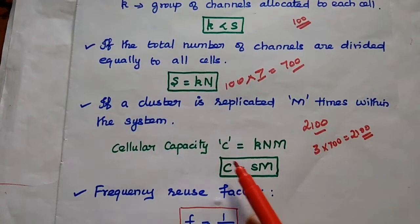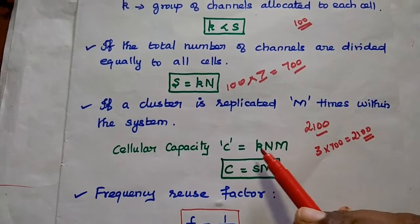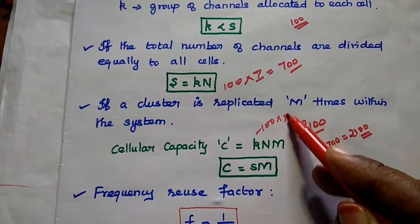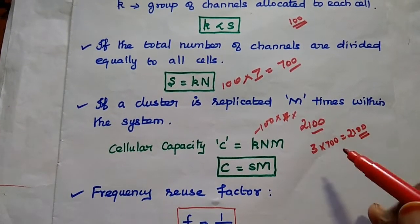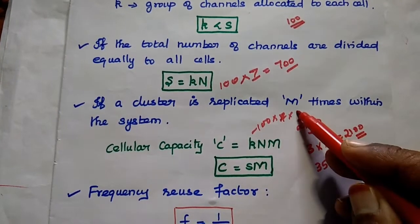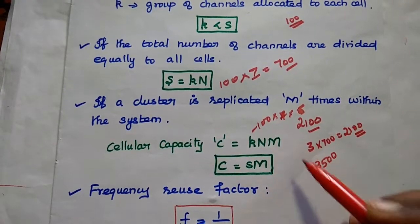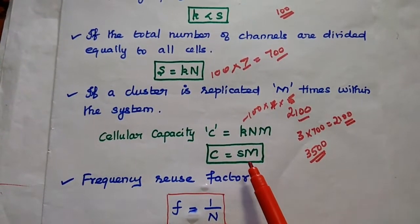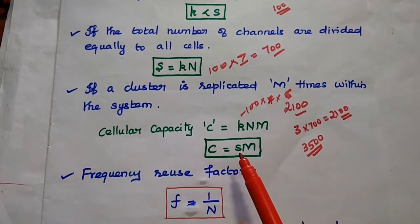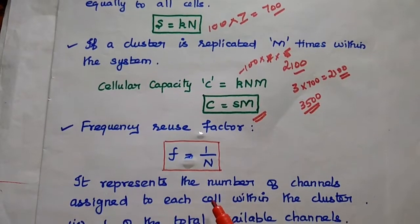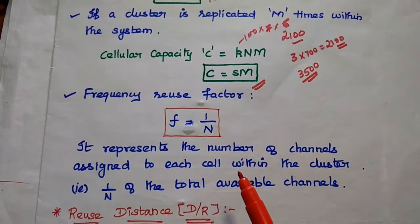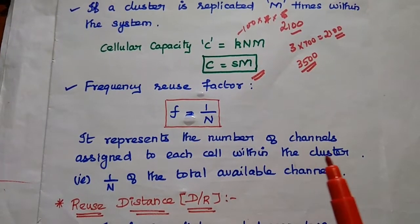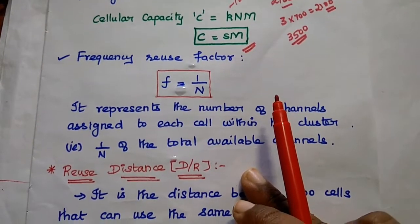Cellular capacity is obtained using the formula C = K × N × M, where K is the number of channels allocated to each cell (100), N is the number of cells in a cluster (7), and M is the replication factor. For example, to support 3,500 users, we replicate the cluster 5 times to get 3,500 users within that area. This capacity can also be represented as S × M, where S = K × N is the total channels. The frequency reuse factor represents the number of channels assigned to each cell within the cluster — it is 1/N of the total available channels, and it is inversely proportional to the cluster size N.